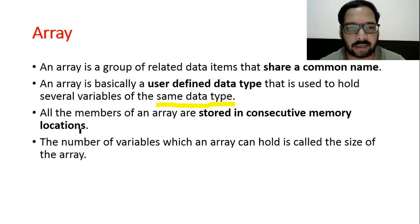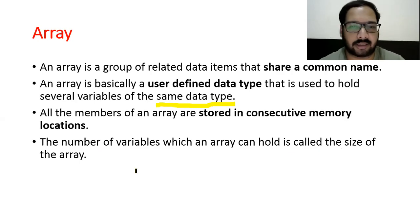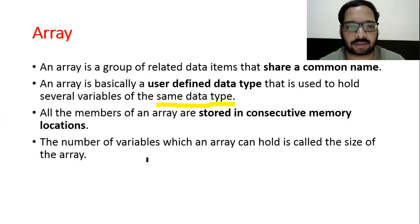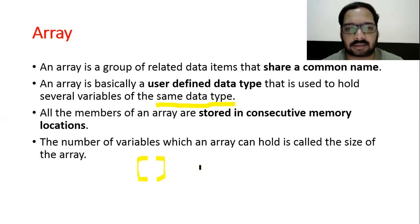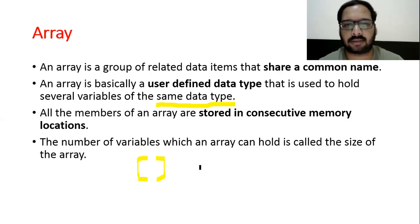An array is a group of related data items that share a common name. An array is basically a user-defined data type used to hold several variables of the same data type. If we don't want to create many variables and want to store many values of the same type in one variable, we use an array. All members of an array are stored in consecutive memory locations. The number of variables an array can hold is the size of the array, specified using square brackets. There are three types of arrays: 1D, 2D, and 3D.